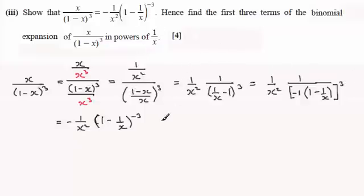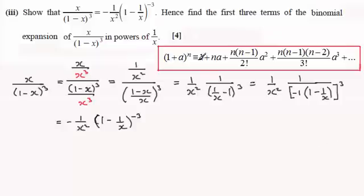We've now got to expand this — hence find the first three terms of the binomial expansion in powers of 1 over x. We can expand this using the binomial expansion formula, just to remind you it's the one we used in the very first part of this question, only this time n is minus 3 and a is minus 1 over x.